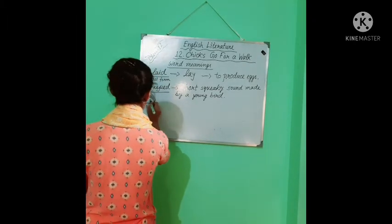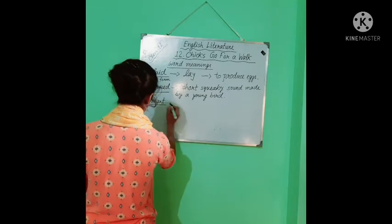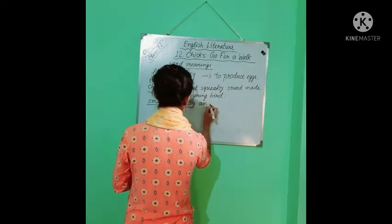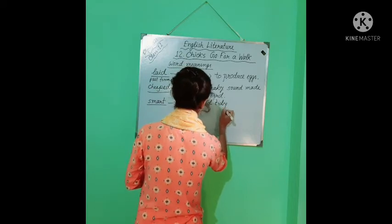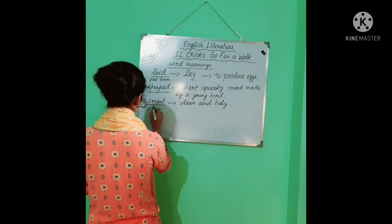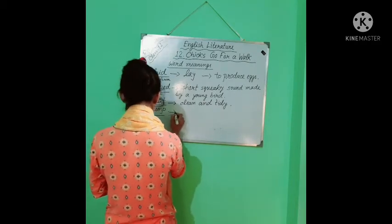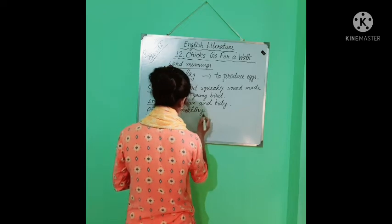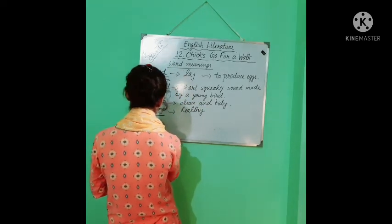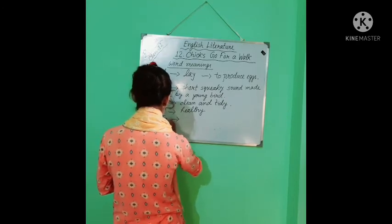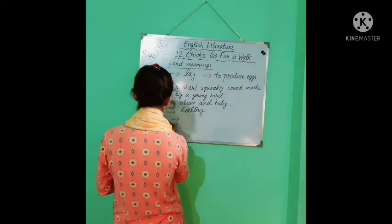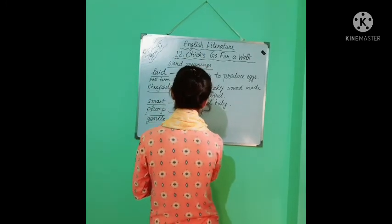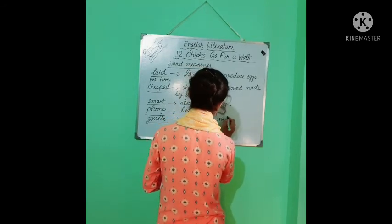Smart. Smart girl or smart boy. It means clean and tidy. Clean and tidy. Now, plump. Plump means healthy. That means having a round shape. Gentle. That means to have a mild character.